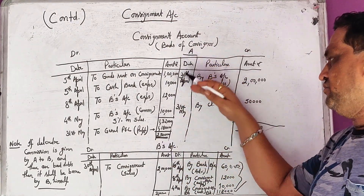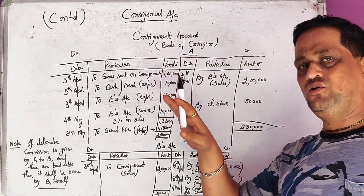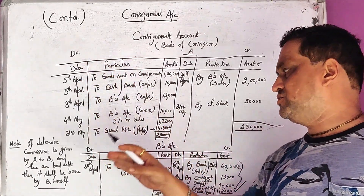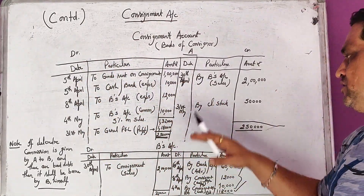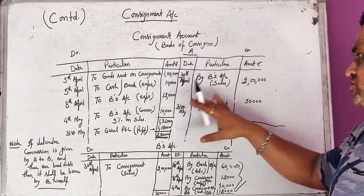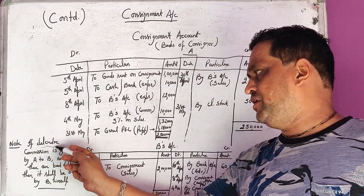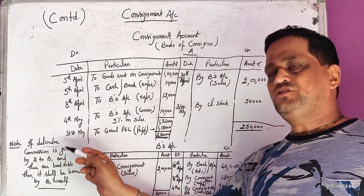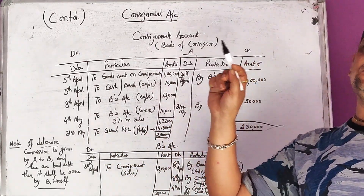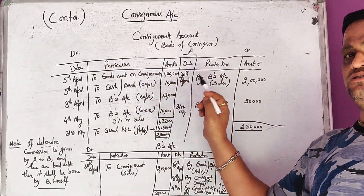So two types of accounts — consignment account and consignee's account — are prepared in this manner. It is a simple method with no complexities. There is no calculation of abnormal loss at this stage. One final point: if there is a del credere commission mentioned in the sum, then no bad debts will be borne by the consignor — total responsibility will be of the consignee.